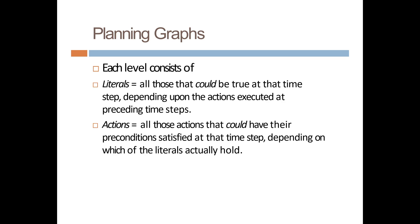In a planning graph, each level consists of literals and actions. Literals are all those statements that could be true at that time step, depending upon the actions executed at preceding time steps — they are the facts. Actions are all those actions that could have their preconditions satisfied at that time step, depending on which literals actually hold. An action is only executed when its precondition is true.